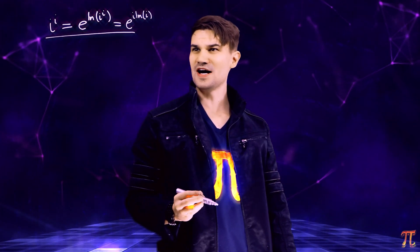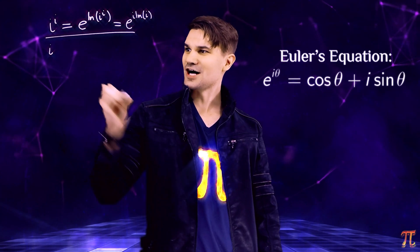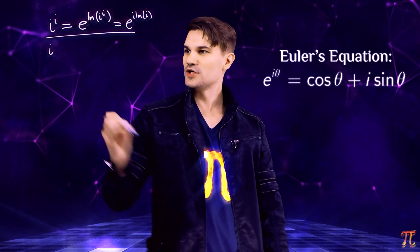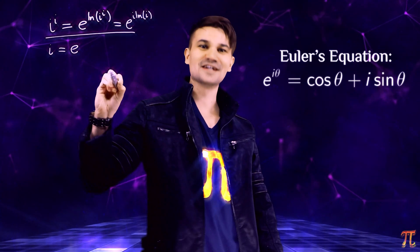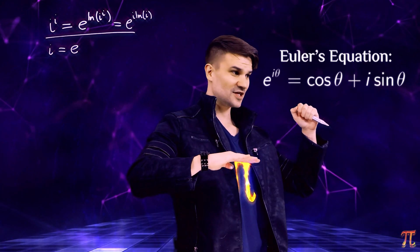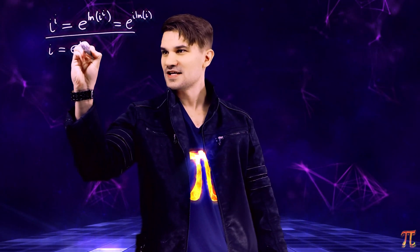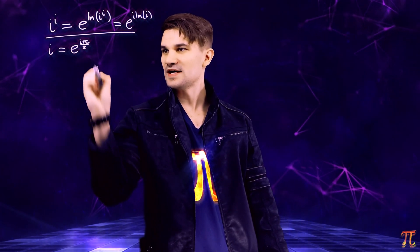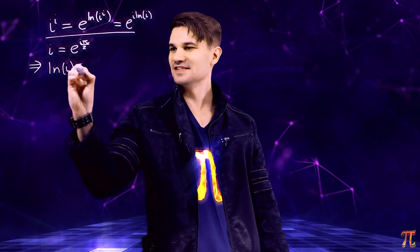Now regarding the natural log of i, we can appeal to Euler's equation. As i is a complex number of absolute value 1, we can write it as e to the i theta, where theta is the angle that this complex number i makes with the positive real axis on the complex plane, which is, of course, pi over 2. So we get e to the i pi over 2 as i, and that means that the natural log of i is i pi over 2.